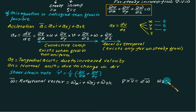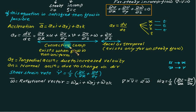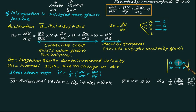For two-dimensional flow, rotation takes place about the z-axis. ωz is given as (1/2)(∂v/∂x − ∂u/∂y). If the flow is irrotational, then ωz = 0, and in that case ∂v/∂x = ∂u/∂y. To remember this: write u and v first, then differentiate in a cross fashion, and multiply by 1/2. These are essentially the Cauchy-Riemann equations.